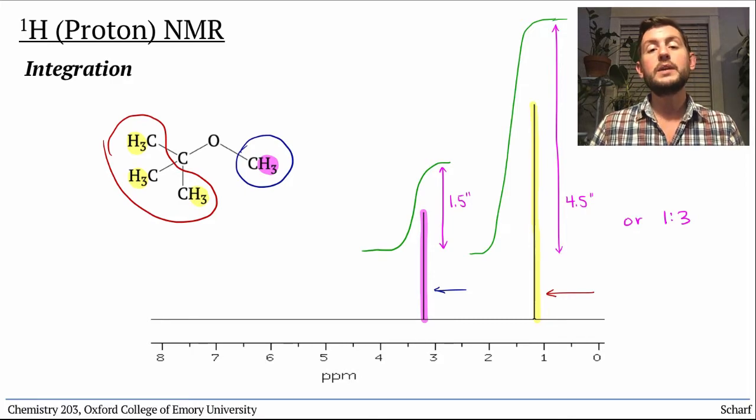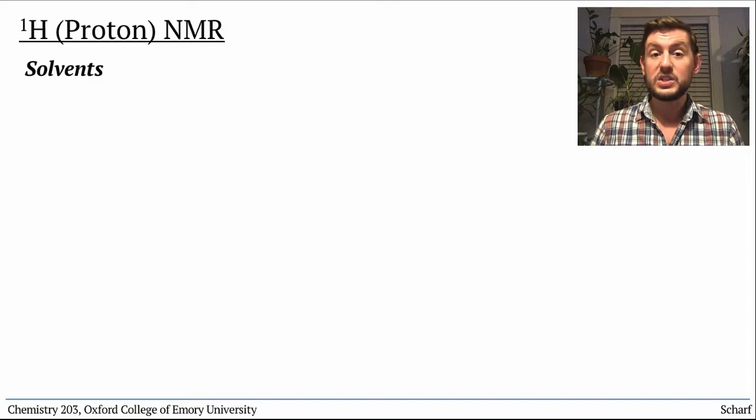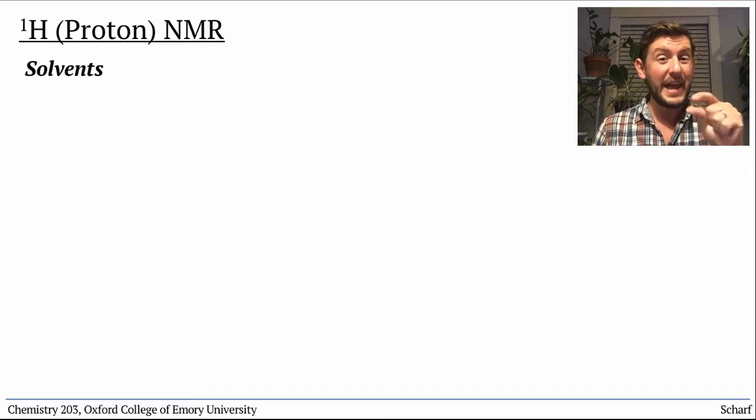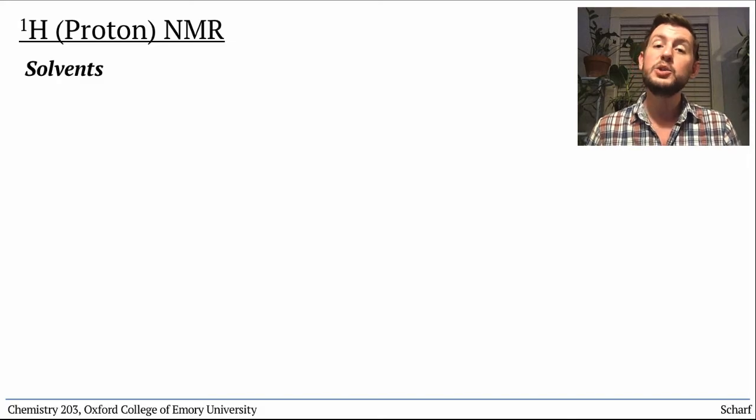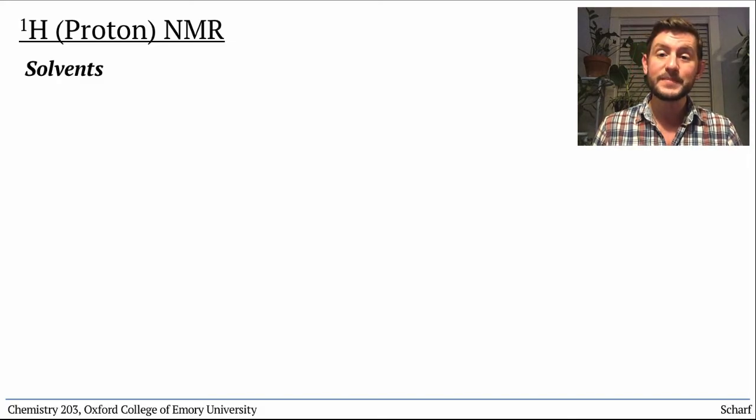In order to obtain quality NMR spectra, the compound we're obtaining a spectrum of needs to be in solution, dissolved. Since most solvents contain hydrogen atoms and we're typically only using a few tens of milligrams of a compound to acquire its NMR spectrum, there's a lot more solvent present than the compound of interest. The solvent's own hydrogen atoms would be way more abundant than the compound we're looking at and would completely overwhelm the interesting peaks.